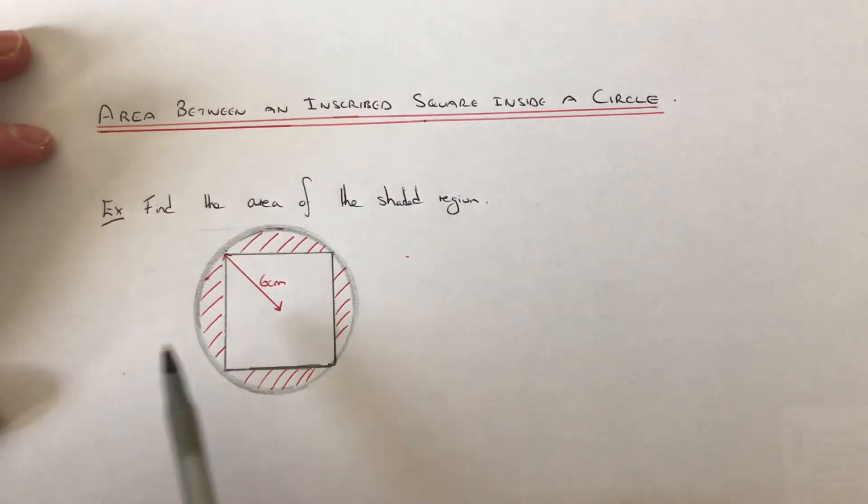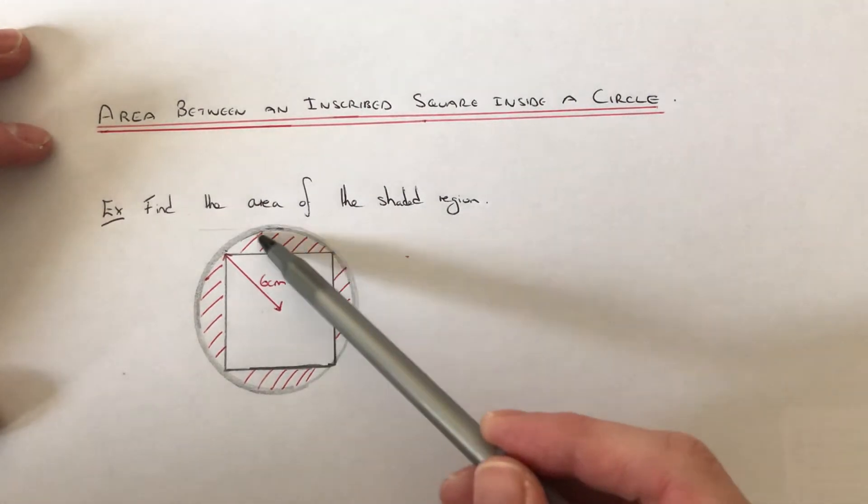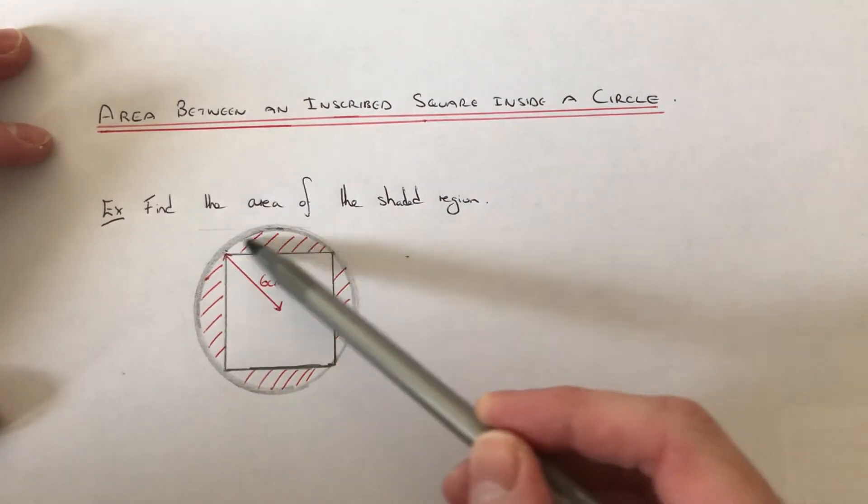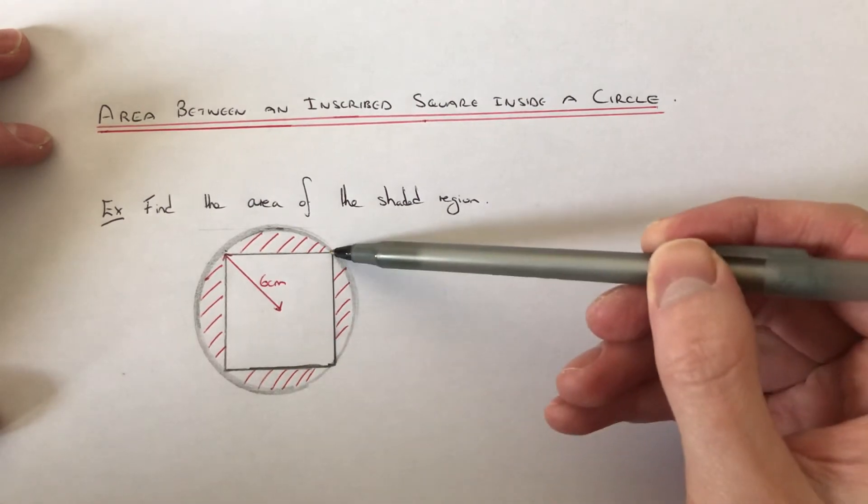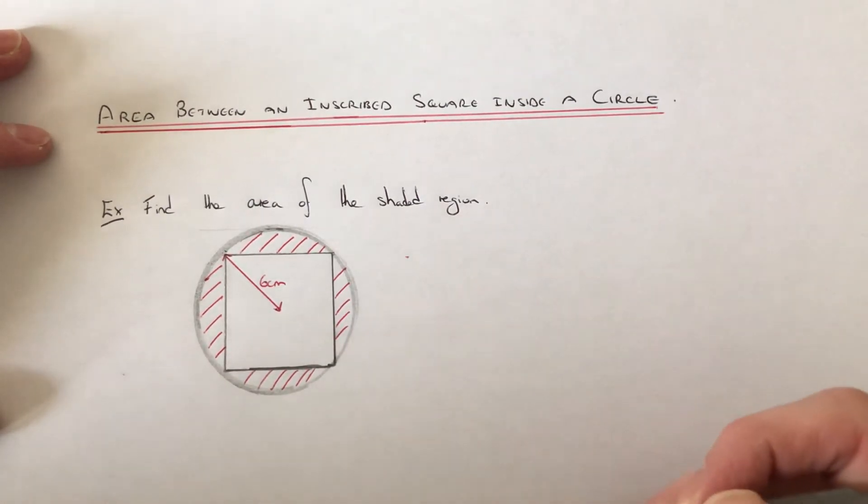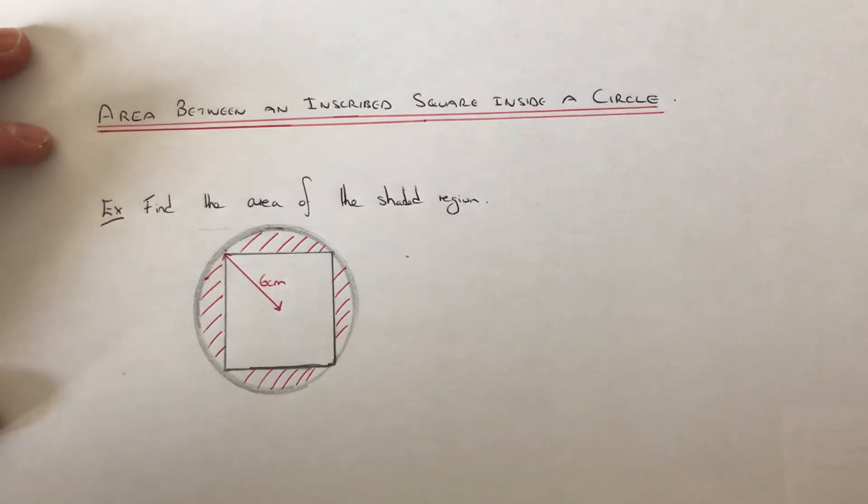Let's have a look at example one. We've got to find the shaded area and the circle has a radius of six centimeters. To do this, we'll need to first of all work out the area of the circle, and then we also need to find the area of the square, and then we work out the difference between these two answers.